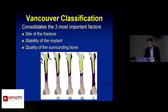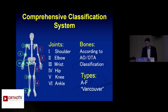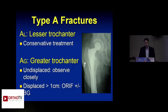The Vancouver classification, divided into ABC based on fracture site and implant stability, has been widely used. There is now also the new comprehensive AO/OTA classification system covering all periprosthetic fractures in upper and lower limb, using Roman numerals 1-6 for the joint replaced and numbers 1-4 for the bone fractured. Unless medically unfit for surgery, all these fractures should be treated surgically to mobilize the patient early and lower the risk of malunion or nonunion.